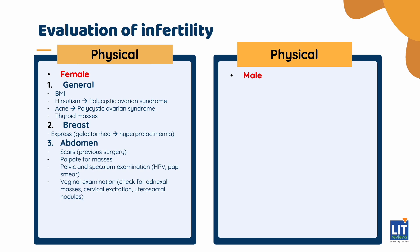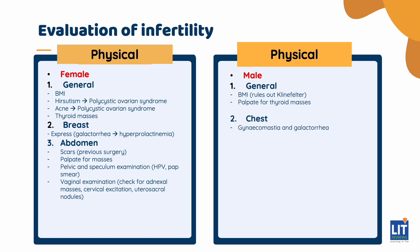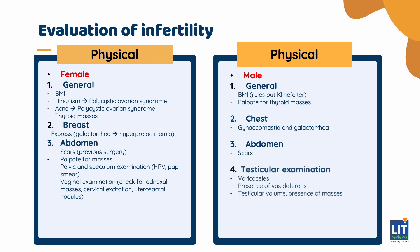For abdominal examination, inspect for scars suggesting previous surgery and palpate for masses. For pelvic and speculum examination, conduct an HPV or pap smear if not up to date with screening. Vaginal examination and bimanual palpation are done to feel for adnexal masses, cervical excitation, and utero-sacral nodules. For the male examination, determine BMI, palpate for thyroid masses, inspect the chest for gynecomastia and galactorrhea, do abdominal examination for scars, and conduct a testicular examination looking for varicoceles, presence of the vas deferens, testicular volume, and masses.